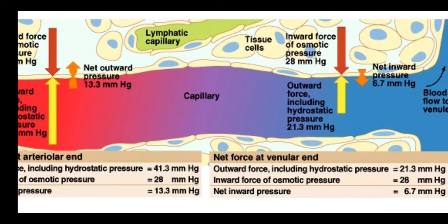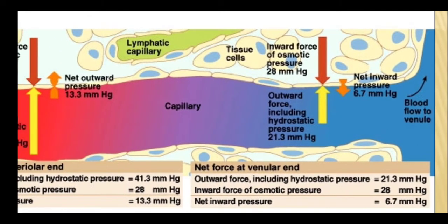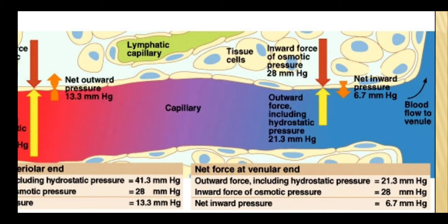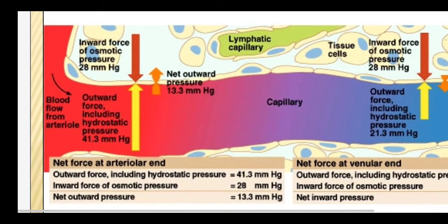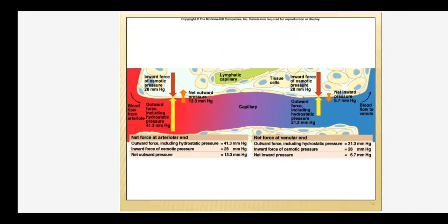On the venous side, the inward force of osmotic pressure is 28, while the outward hydrostatic force is 21 — meaning the inward force is high. So toxic materials or end products of metabolism are carried into the venous side and out through the veins. The net inward pressure is 6.7, so waste materials are collected into the veins and carried away through the blood. This is an important mechanism of delivering nutrients to the body.